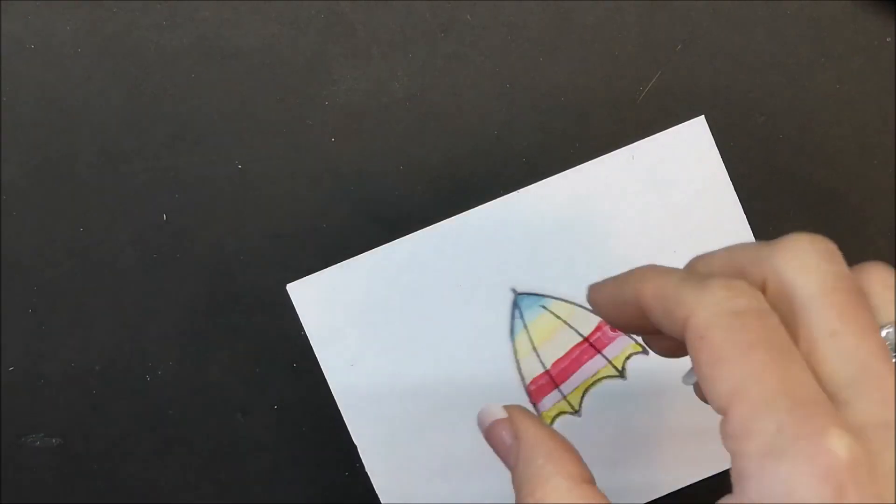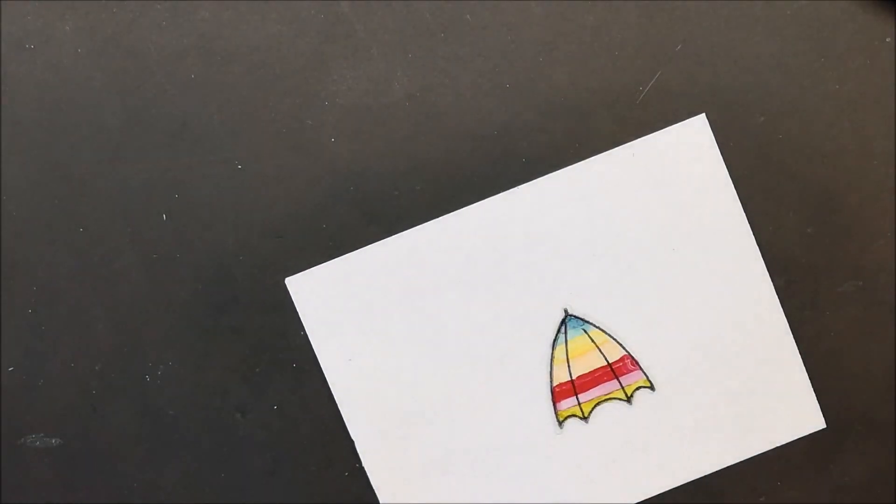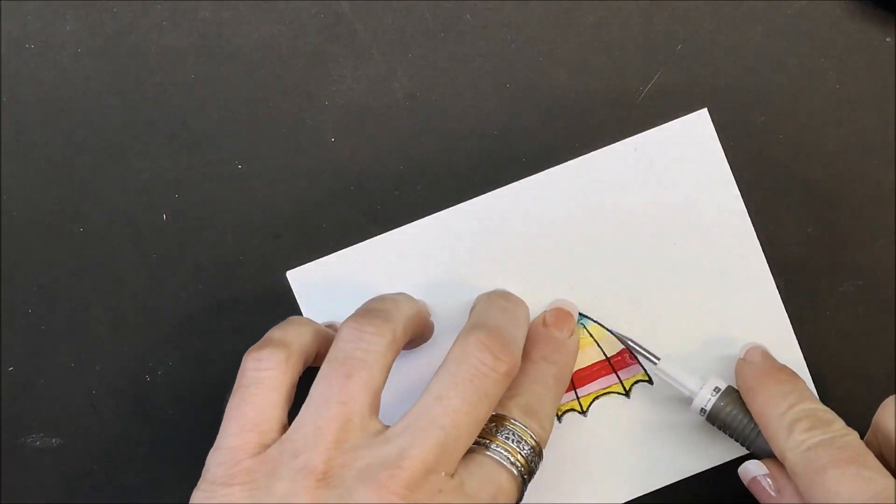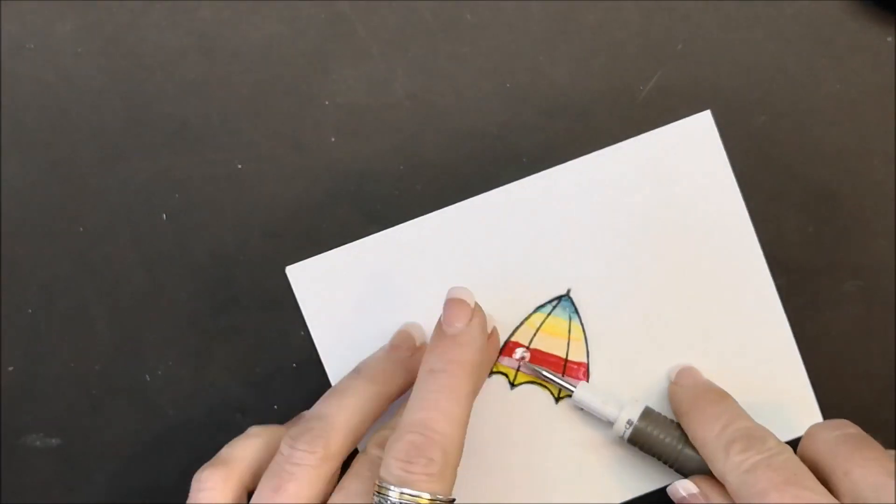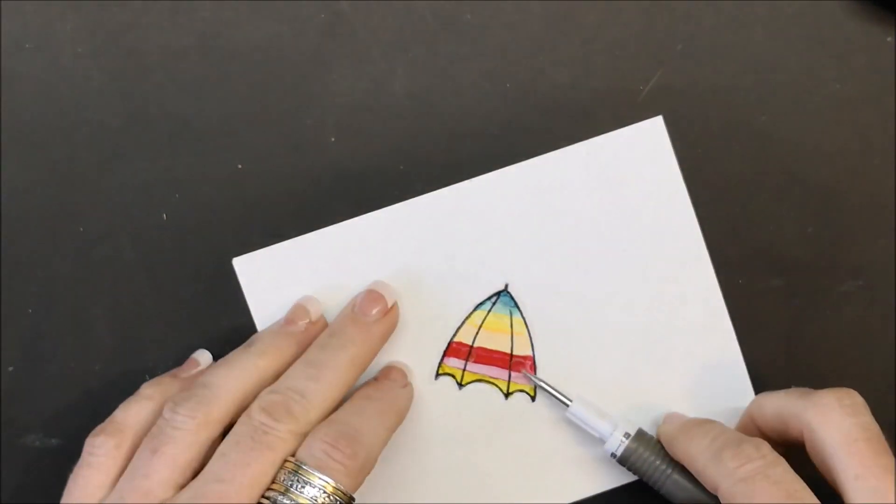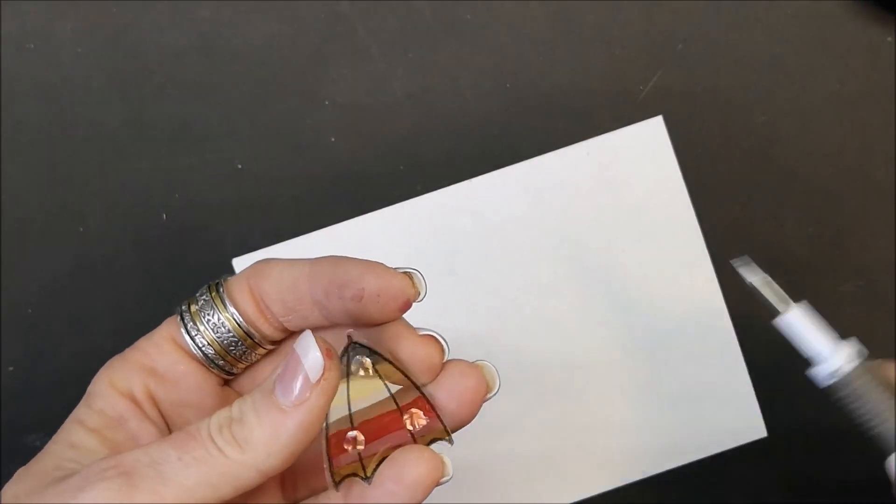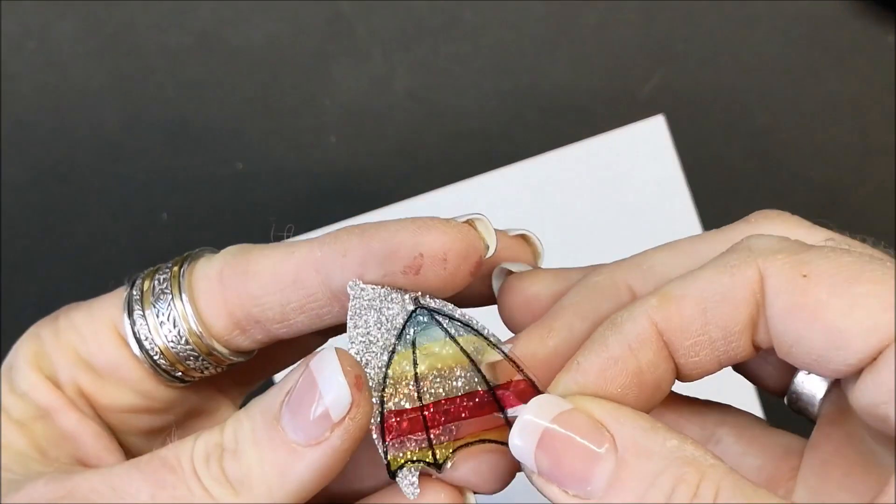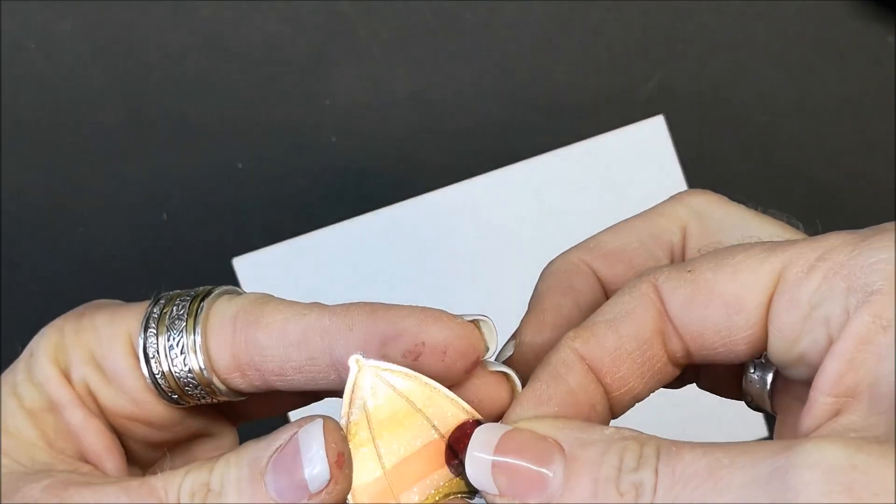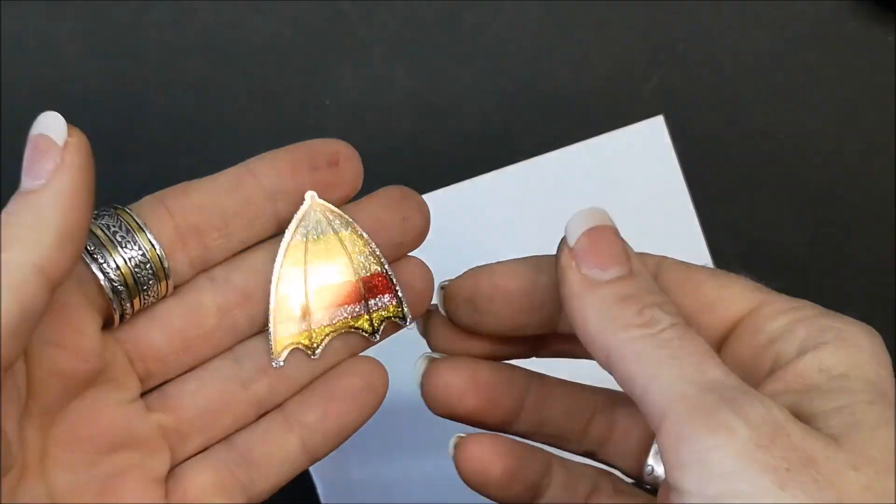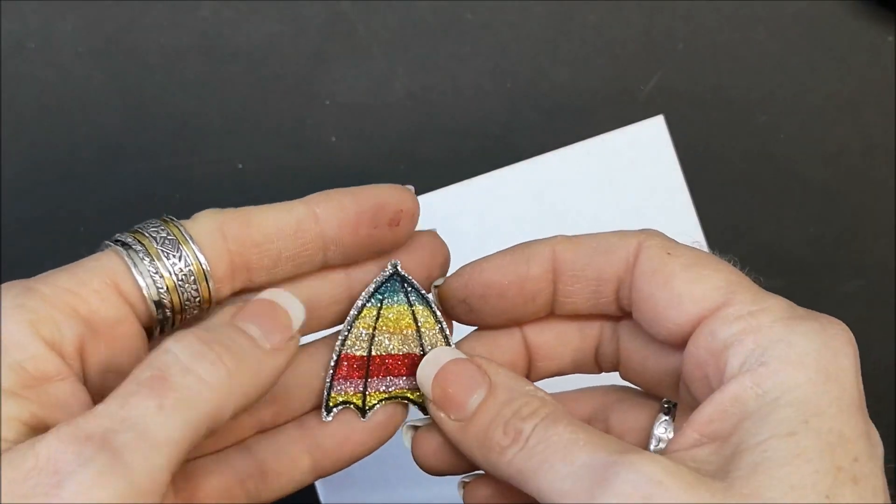I'm going to put on my glue dots. Let's see what happens when I put the silver glimmer behind this. Look at that for a rainbow umbrella.